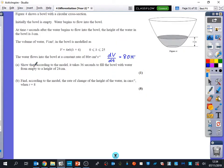The first thing it says is show that according to the model it takes 36 seconds to fill the bowl with water from empty to a height of 24. Well, if the height is going up to 24, I can find out how much volume there is inside the bowl by doing the formula, which is 4π multiplied by 24 multiplied by 24 plus 6, which works out as 2,880π. So that's the volume of the bowl when the height is 24.